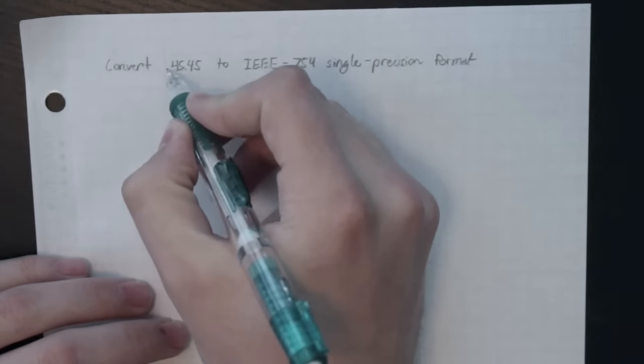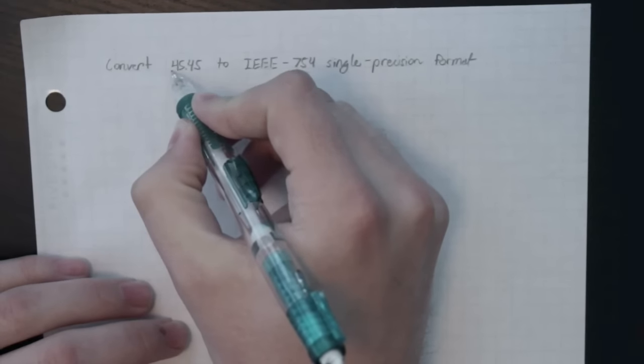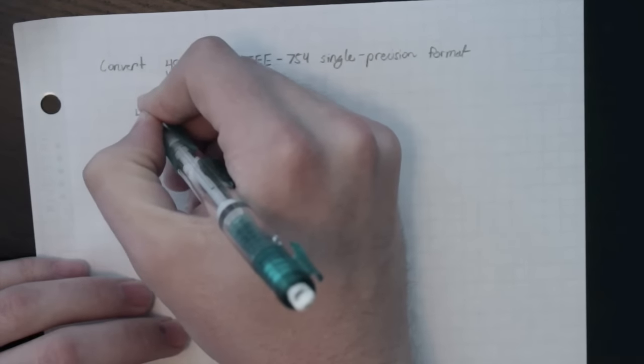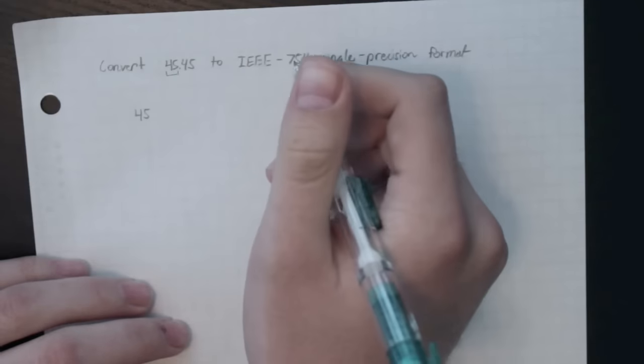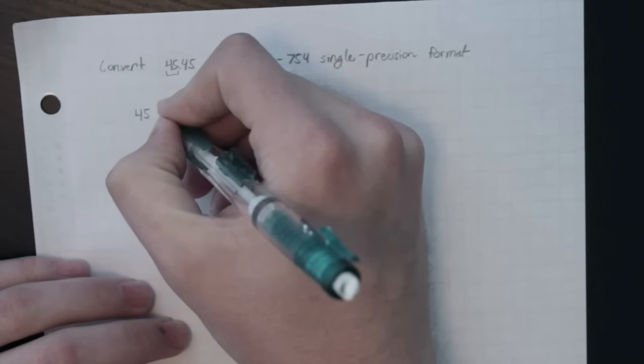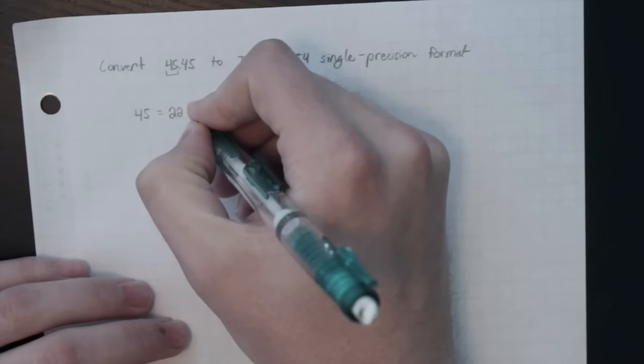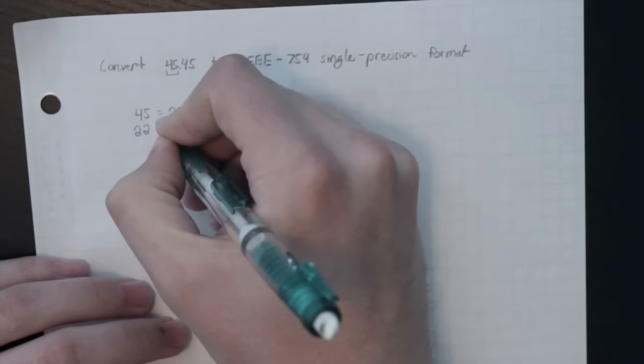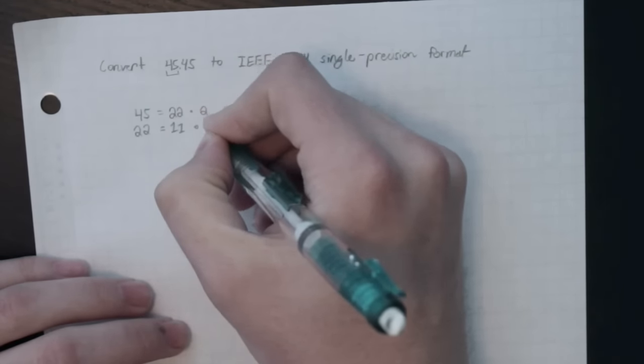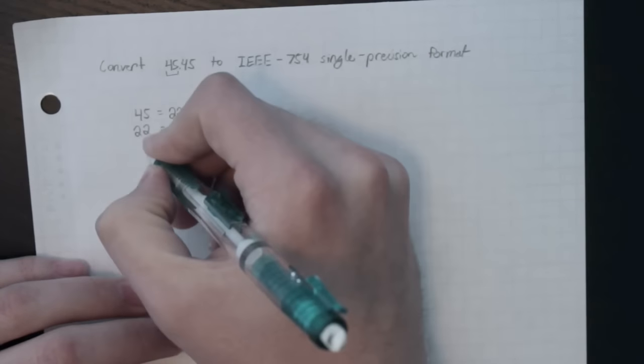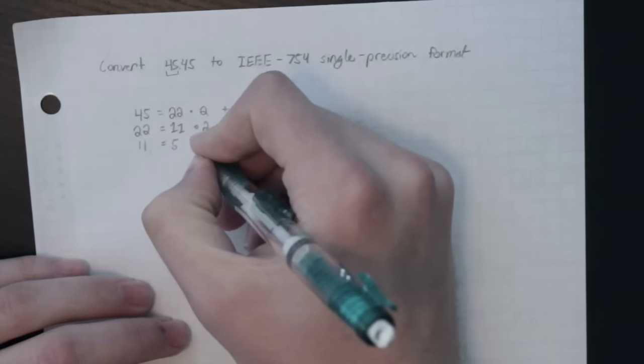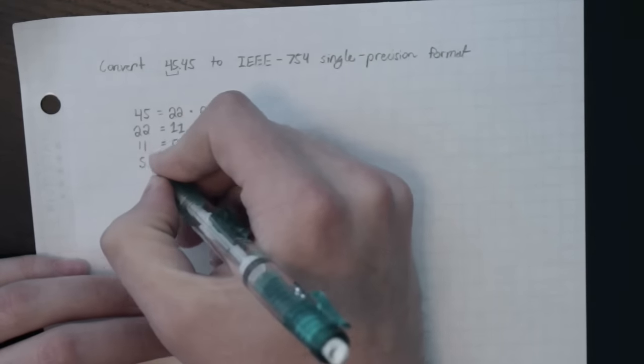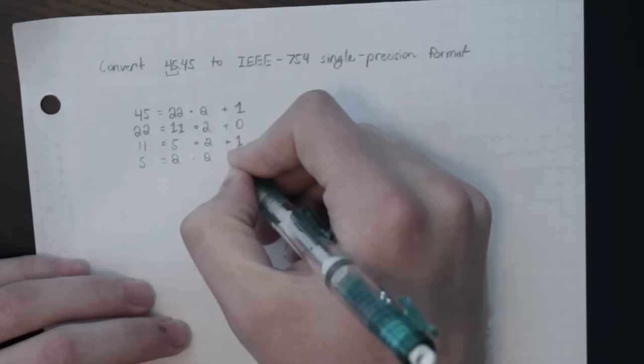The first thing we're going to do is we have to convert the left-hand side of our decimal point to binary, so that's 45. So let's go ahead and do that. This is a pretty standard procedure. You've done this tons of times from, I think it was homework 1. So 45 can be represented as 22 times 2 plus 1, and then 22 can be represented as 11 times 2 plus 0.